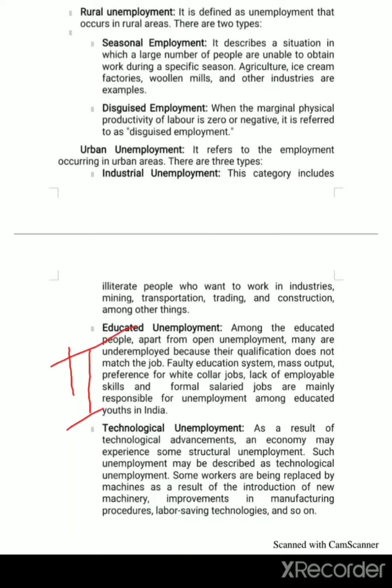The second urban unemployment is educated unemployment. Under the urban area, some educated and qualified employees are not able to get good jobs. Among the educated people, apart from open unemployment, many are underemployed because their qualification does not match the job. Faulty education system, mass output, preferences for white-collar jobs — meaning well-qualified top-level jobs — lack of employable skills, and informal salary structures are mainly responsible for unemployment among educated youth in India.